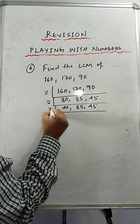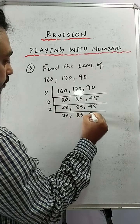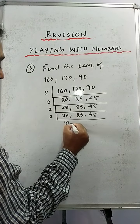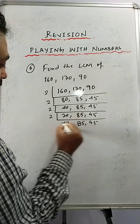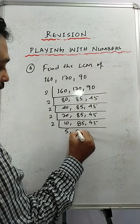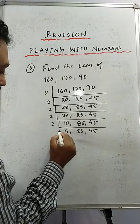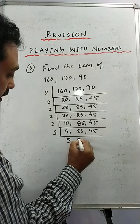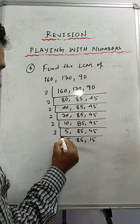Again divisible by 2: giving 10, 85, 45. Again divisible by 2: giving 5, 85, 45. Now this number 45 is divisible by 3: so dividing by 3 gives 5, 85, 15.